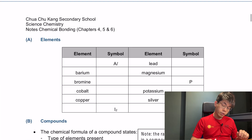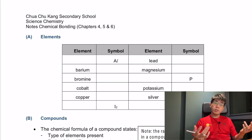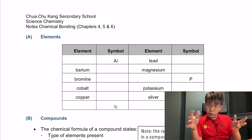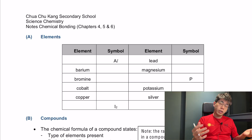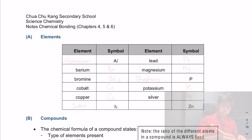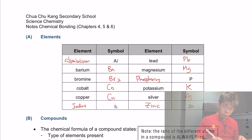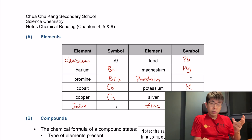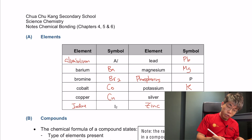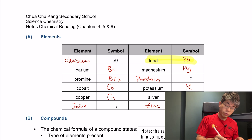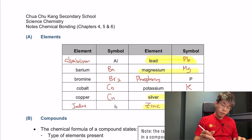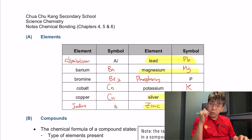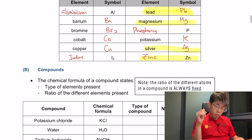Let's look at some examples of elements. I suggest you pause the video right now, look at the periodic table, and try to fill this table up. Get used to knowing where certain elements are — especially things like lead, which can be a bit hard to find. Make sure you know how to find magnesium, zinc, and silver, as these can be tricky.